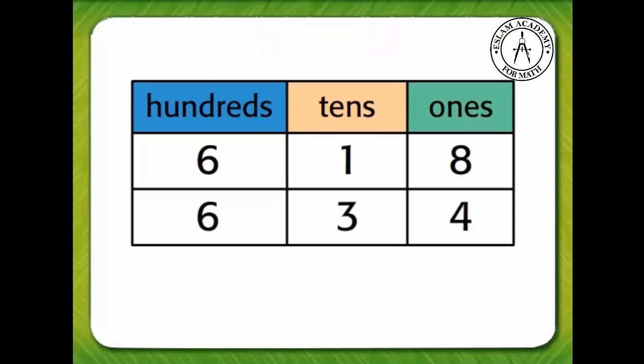When comparing numbers we look at one digit and compare it to another number. Start with the number that has the greatest place value, hundreds. When we compare the numbers in the hundreds place we find that both are equal. They both have six hundreds.